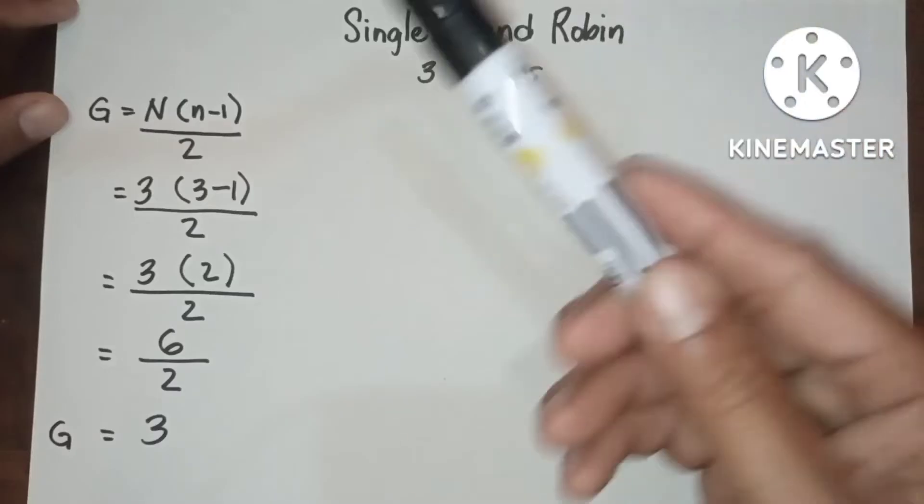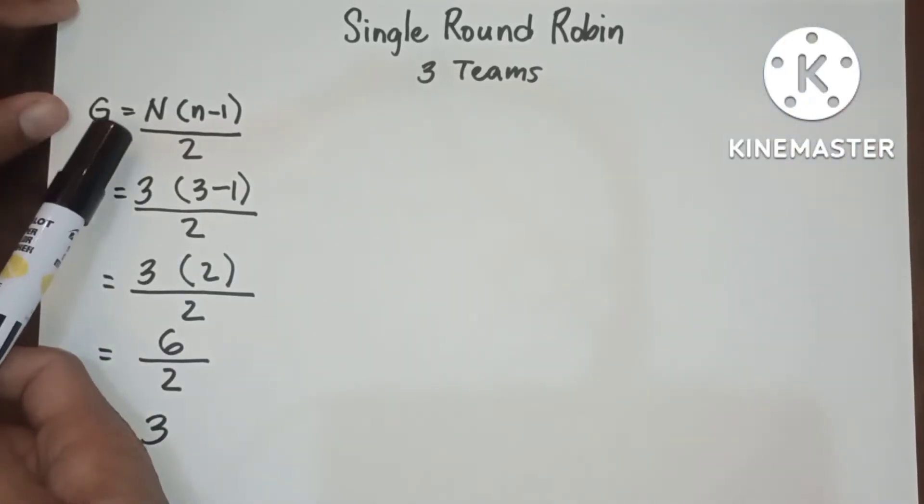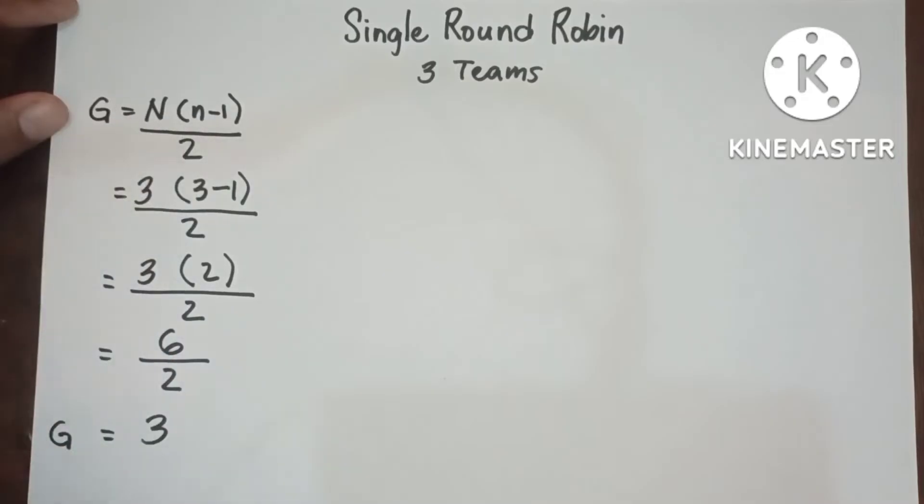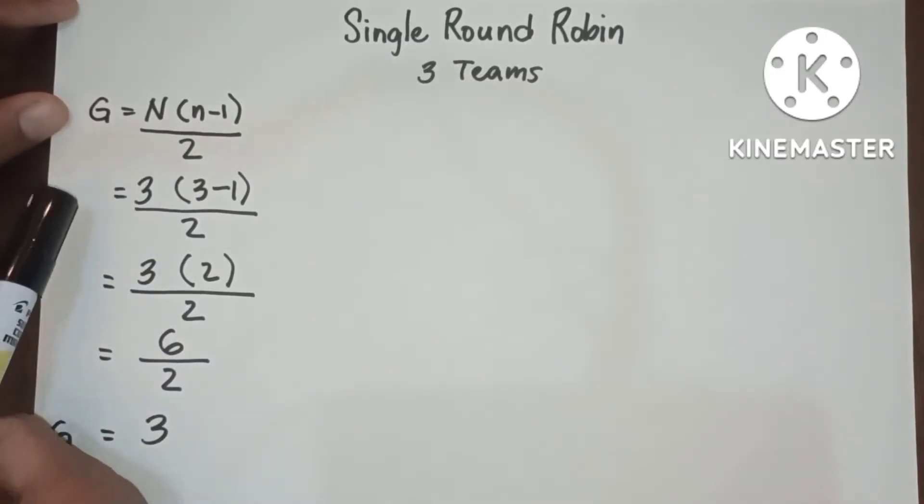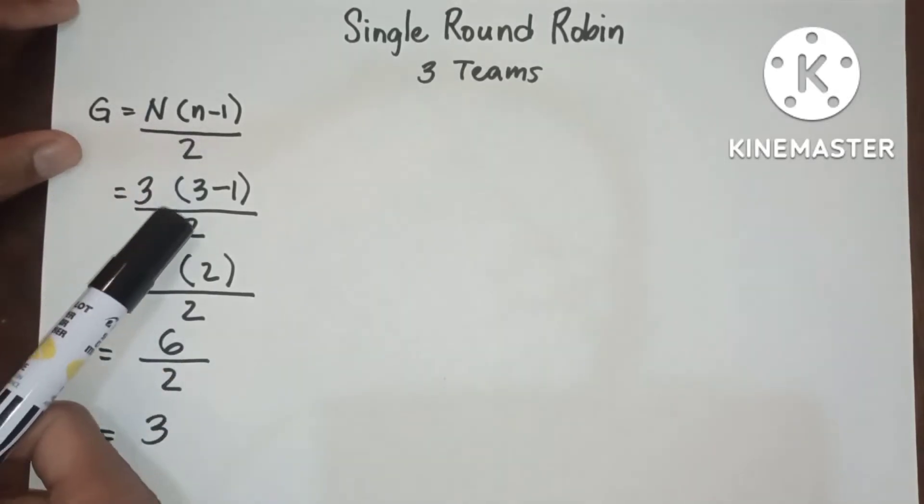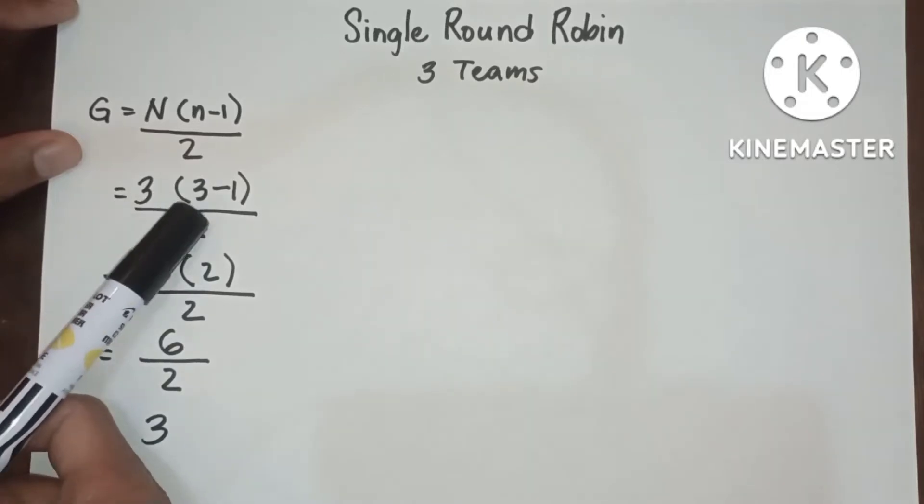In single round robin, we have the formula G equals N times N minus 1 divided by 2. We replace N with 3, the number of entries.